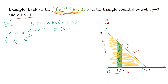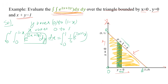The integrand is e raised to the power (2x + 3y) dy dx. First we take the integration with respect to y, since the y limits are in terms of x (0 to 1 minus x) and the x limits are constant (0 to 1). Integrating with respect to y treating x as constant, we get 0 to 1 of (1/3) e^(2x+3y) evaluated from 0 to 1 minus x, dx. Applying the limits, we get the integral from 0 to 1 of (1/3)[e^(3-x) minus e^(2x)] dx.